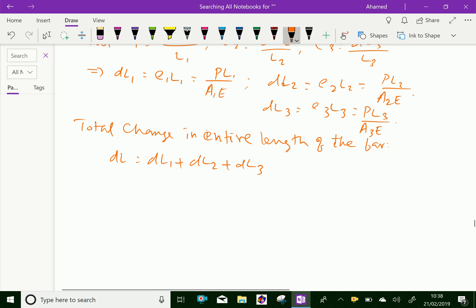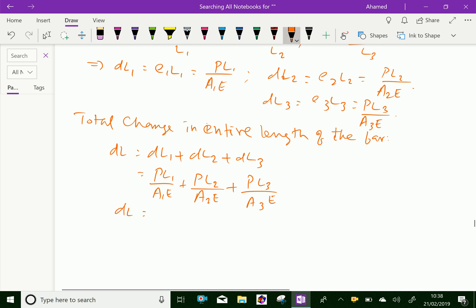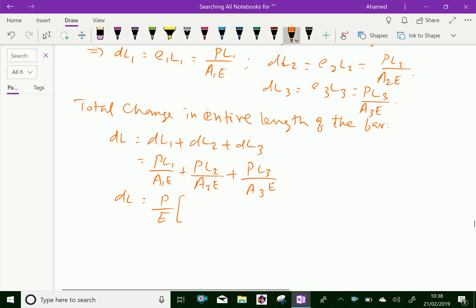We can substitute the values: P L1 over A1E plus P L2 over A2E plus P L3 over A3E. Therefore, delta L equals P over E is common, then we can write L1 over A1 plus L2 over A2 plus L3 over A3.